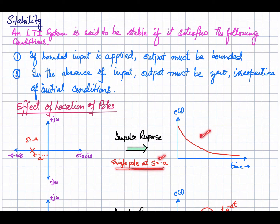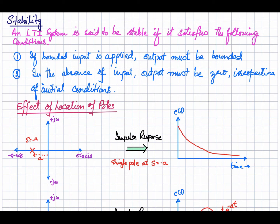If you look at the impulse response of this system with a single pole at s equal to minus a, you will see that the system response is decaying — it is finite. As time approaches infinity there is a finite value of the response, so it is a bounded output. When you have one single pole at the negative real axis, your response is finite, so your system is stable.